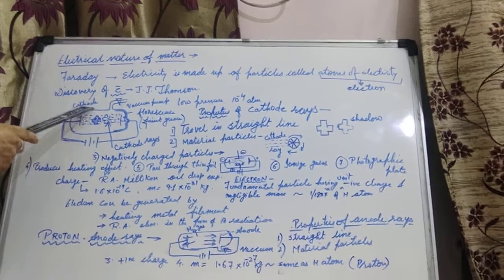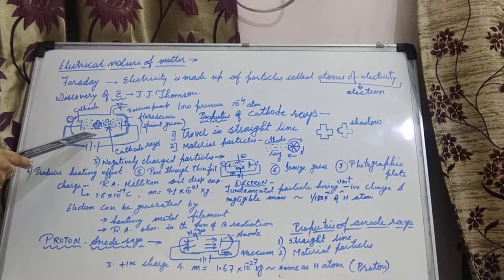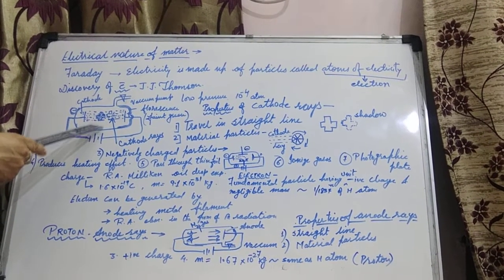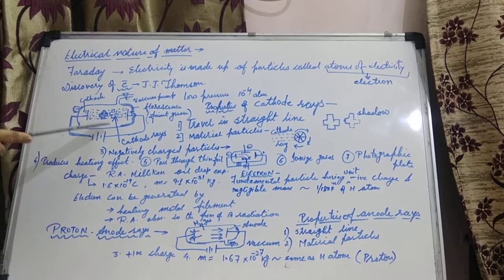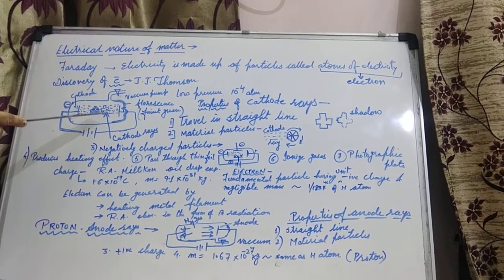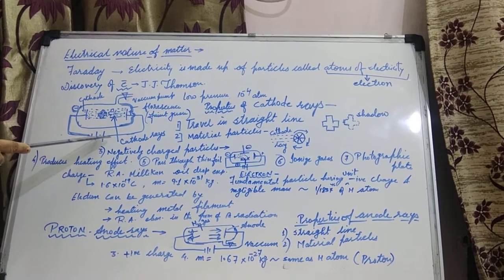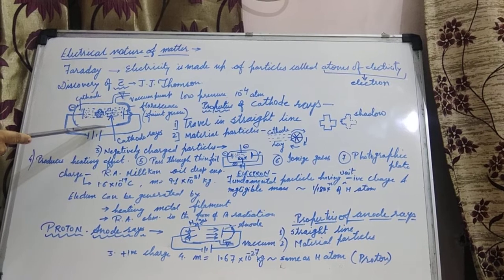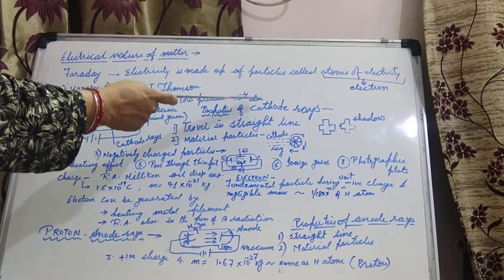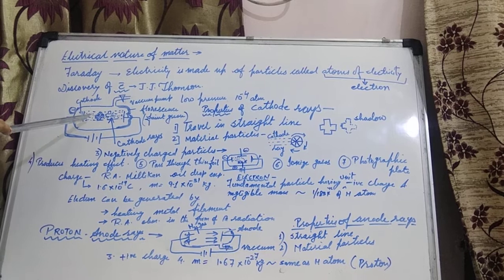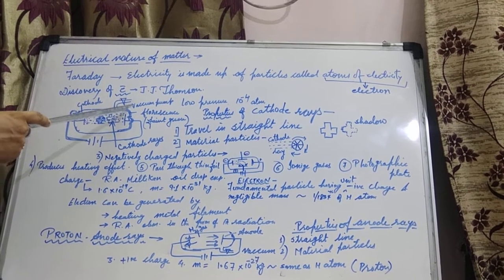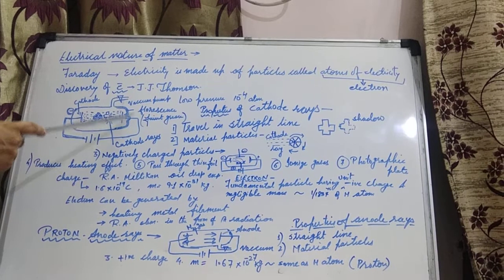In this discharge tube, some gas is filled. It was observed that no current was flowing inside the discharge tube because gases are bad conductors of electricity. But gases are bad conductors at atmospheric pressure. If we reduce the pressure, at that time gases become conducting in nature. So the pressure is reduced up to 10 raised to the power of minus 4 atmosphere. At that time, it is observed that in front of the cathode, on the walls of the discharge tube, a faint green colored glow was seen.